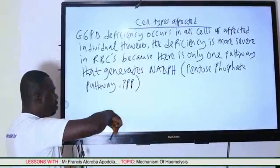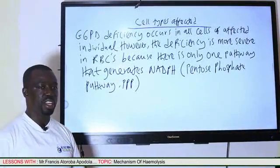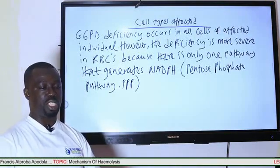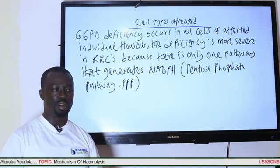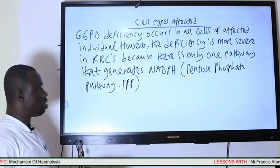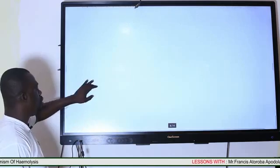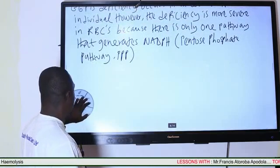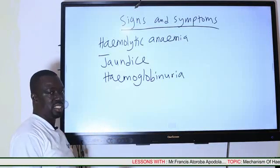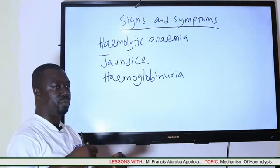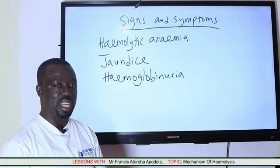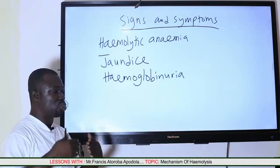The red blood cells are most stressed, and that is why we perform the GCSPD test on red blood cells from a blood sample — to find whether the GCSPD enzyme is deficient or not, because red blood cells are more affected compared to the other cells of the body. So now let's look at the signs and symptoms of the GCSPD-deficient individual.